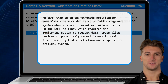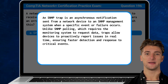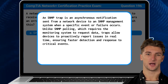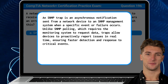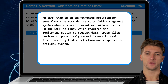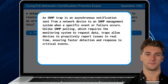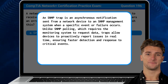An SNMP trap is an asynchronous notification sent from a network device to an SNMP management system when a specific event or failure occurs. Unlike SNMP polling, which requires the monitoring system to request data, traps allow devices to proactively report issues in real time, ensuring faster detection and response to critical events.